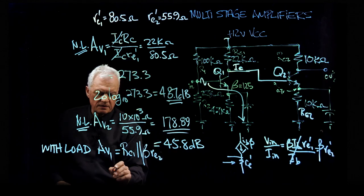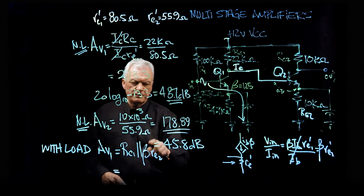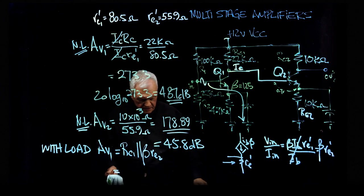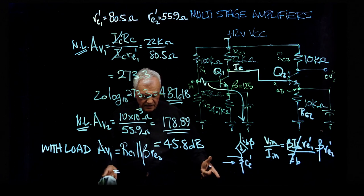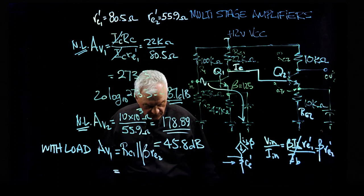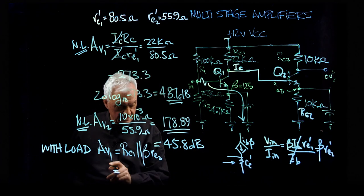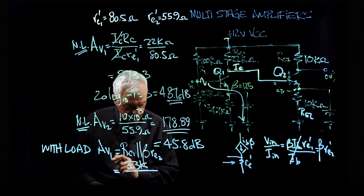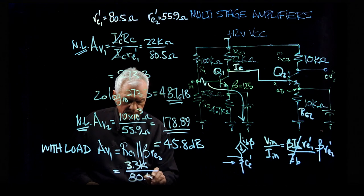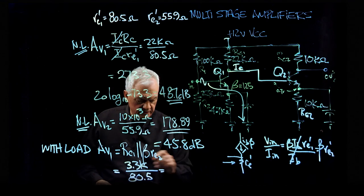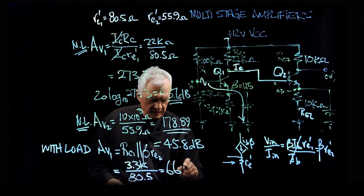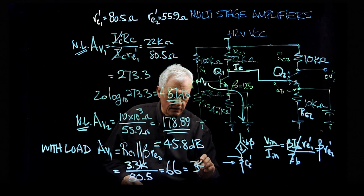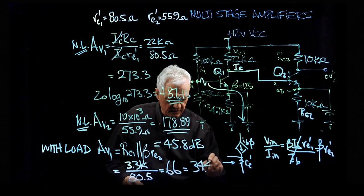And that's going to equal 22K in parallel with 125 times 55.9, which is 22K in parallel with 7K, over 80.5. So it's going to come out to 3.3K over 80.5. And that, when you do the math, is going to be 66. And that, if you do 20 log base 10 of 66, it's going to be 34.4 dB.